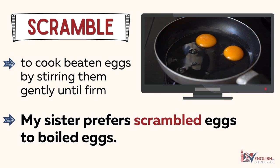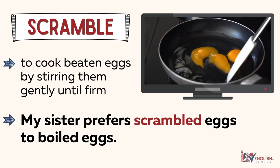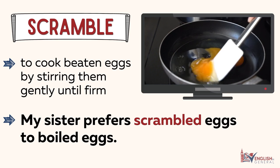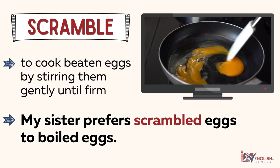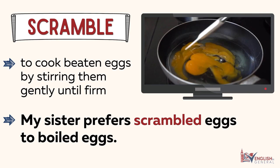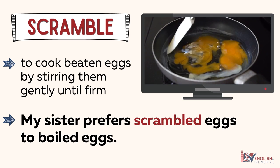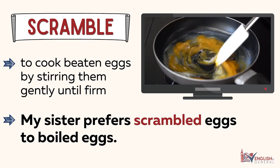Scramble. Definition: to cook beaten eggs by stirring them gently until firm. My sister prefers scrambled eggs to boiled eggs.